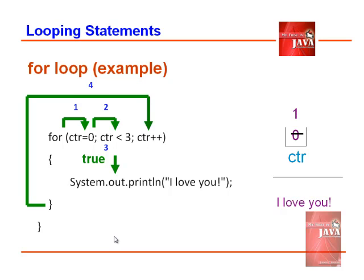After reaching the closing brace of the block, the program loops back and executes increment CTR. CTR has now a value of 1. Is CTR less than 3? True. Print again, 'I love you' for the second time.